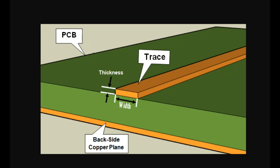Today we're going to talk about PCB trace width and thickness and current handling capabilities. The trace is the copper deposited on top of your substrate — generally fiberglass. You have three measurements: thickness, width, and length. The wider, thicker, and to some extent the longer the trace is, the more current and power it's going to be able to handle without overheating and burning up.